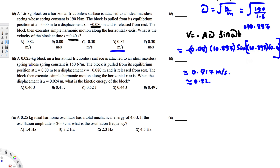Now let's look at the next question. A 0.025 kilogram block on a horizontal surface is attached to an ideal massless spring whose spring constant is 150 N/m. The block is pulled from its equilibrium position to a displacement — again, that displacement is the amplitude — and released from rest. The block executes simple harmonic motion along the horizontal x-axis. When the displacement x = 0.024 m, what is the kinetic energy of the block?